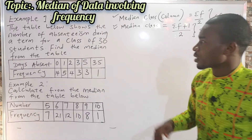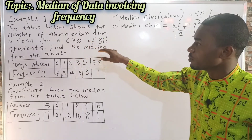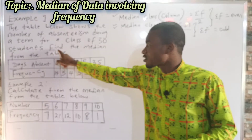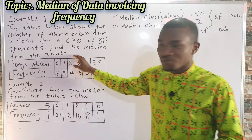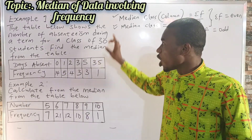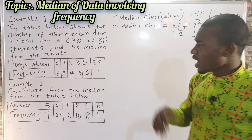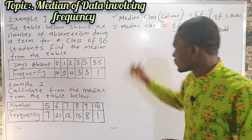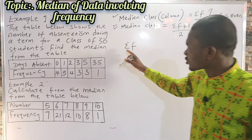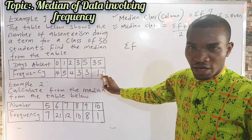Let's begin with the first example. The table shows the number of absenteeism during a time period for a class of 30 students. We are asked to find the median from the table. The first step is to find the summation of f, which means to sum all the frequencies in the table.